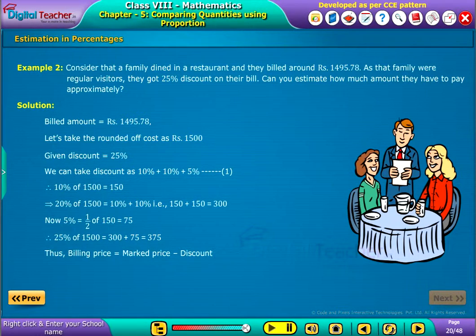Thus, billing price equals market price minus discount, which equals 1500 minus 375, that equals Rs. 1125. So, they have to pay approximately Rs. 1125.